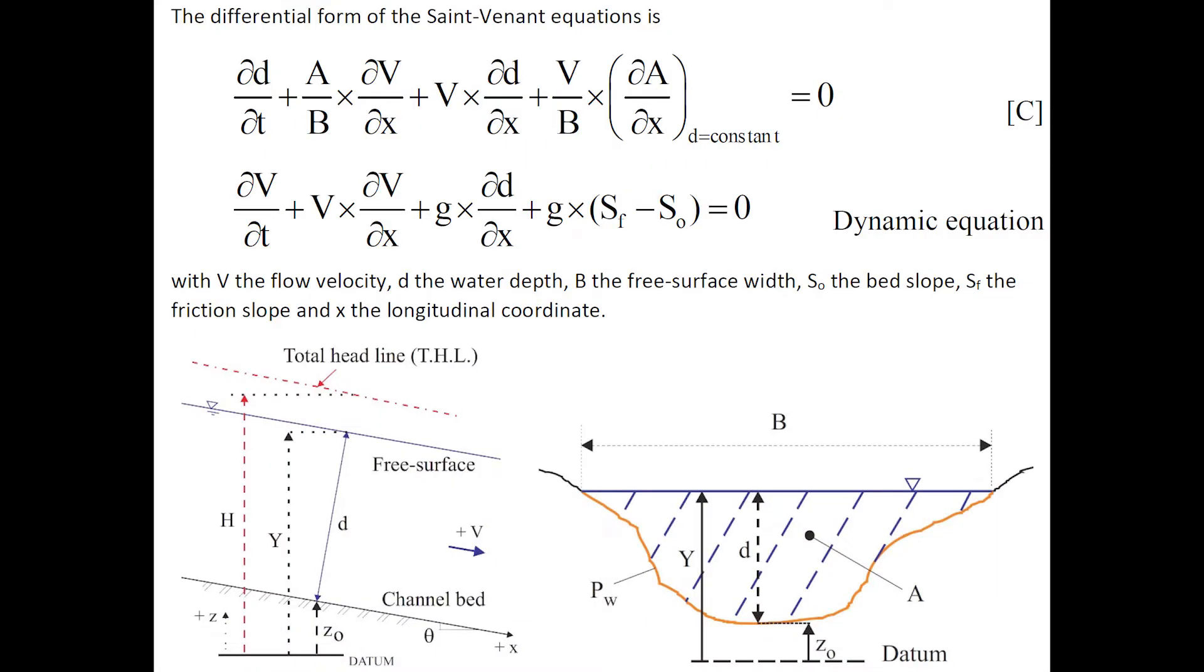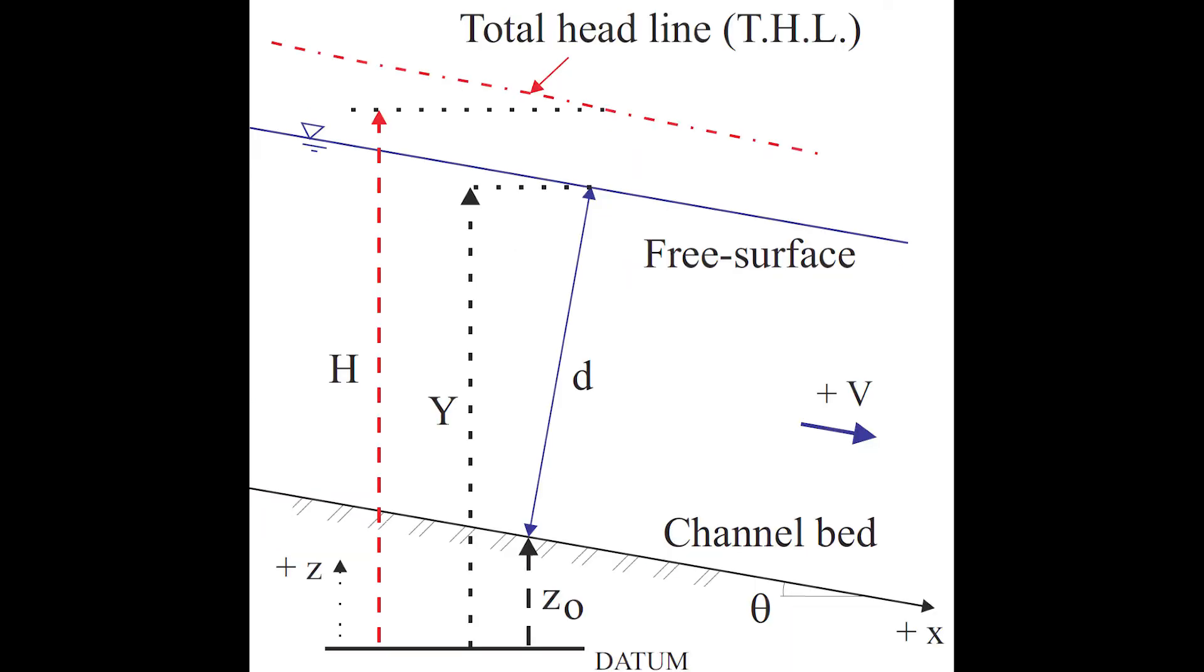The differential form of the Saint-Venant equations is shown here, in which d is the water depth, V the flow velocity, B the free surface width, S_0 the bed slope, S_f the friction slope, and x is the longitudinal streamwise coordinate.